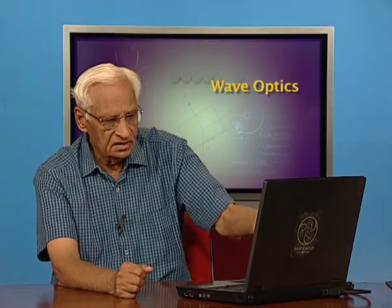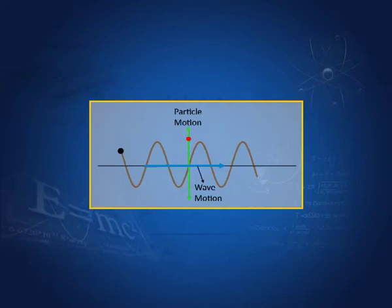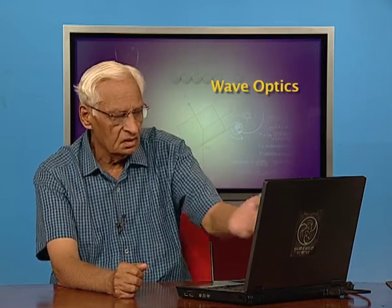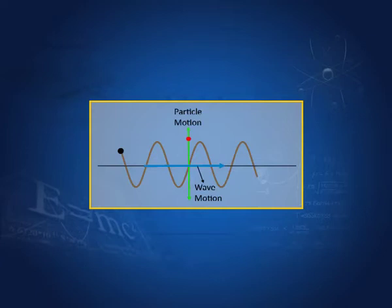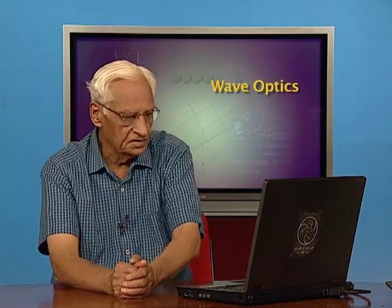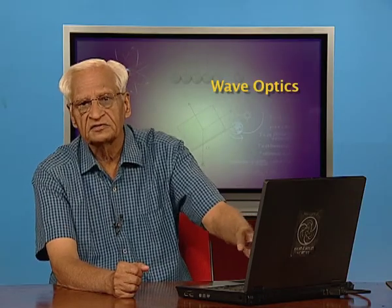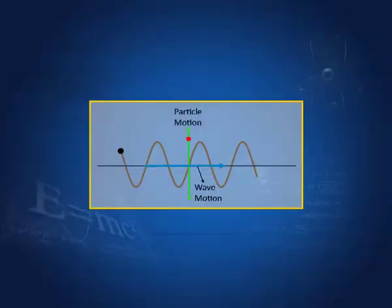Let us go back again to waves and look at their nature, since we are going to use electromagnetic waves a great deal. This wave is traveling along this direction, and a particle of the medium — I am now taking not electromagnetic waves but waves in general — oscillates at the same place while the wave passes it by. Let me show you here: this is the animation of the wave and the particle motion.